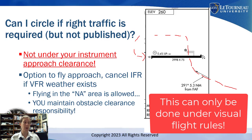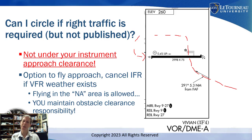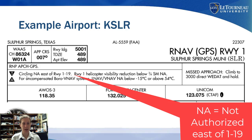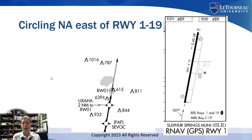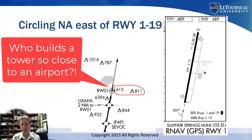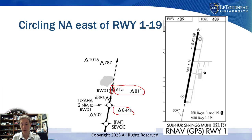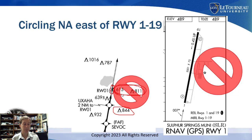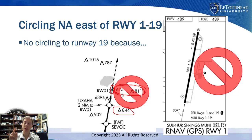I want to show you one more example that is even more black and white. Here's an example at Sulphur Springs, where we again have circling N-A — this time east of runway 119. I've been over to Sulphur Springs also, and there are some obstacles that are ridiculously close to the runway. The runway is right here, and I don't know how obstacles ended up so close to the airport. So it makes sense that they say you can't circle east of runway 119 because of the obstacles.